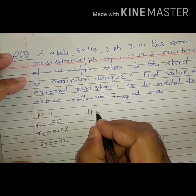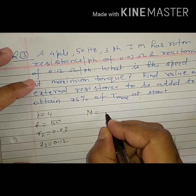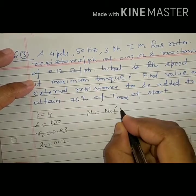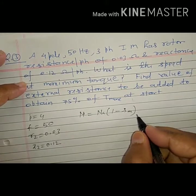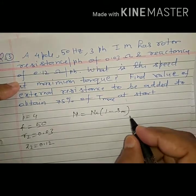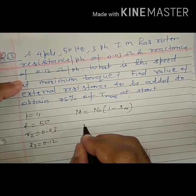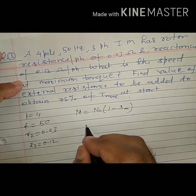Speed at maximum torque is N equal to NS times 1 minus S. S will be SM because speed at maximum torque is asked. What is NS? You must find NS also and SM.